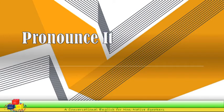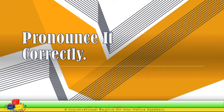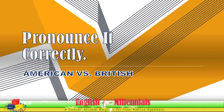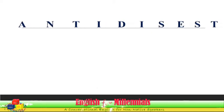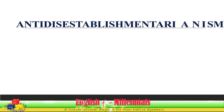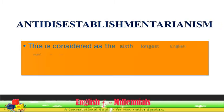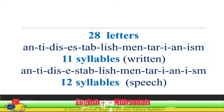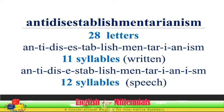Pronounce it correctly: American versus British. This is considered the sixth longest English word in use. It is a 19th century political movement seeking the separation between the state and the church in England. It has 28 letters, 11 written syllables, but 12 spoken syllables.